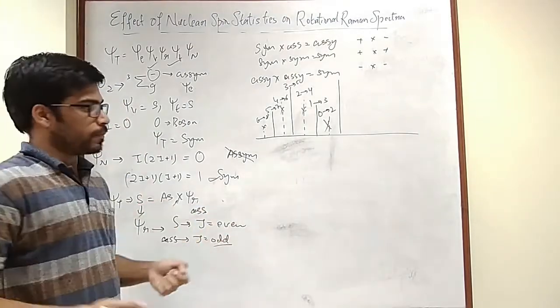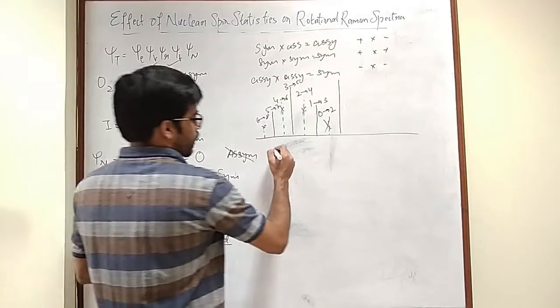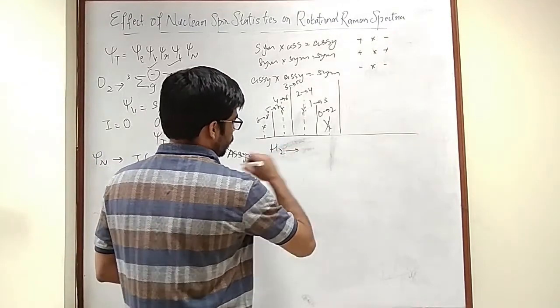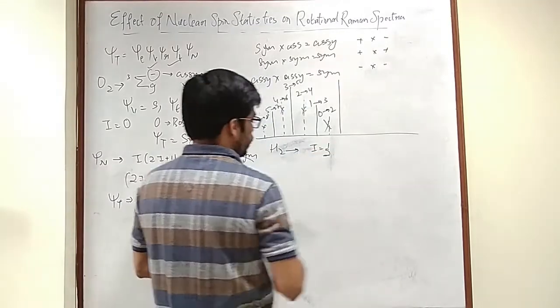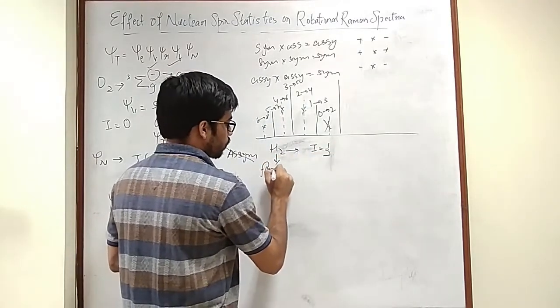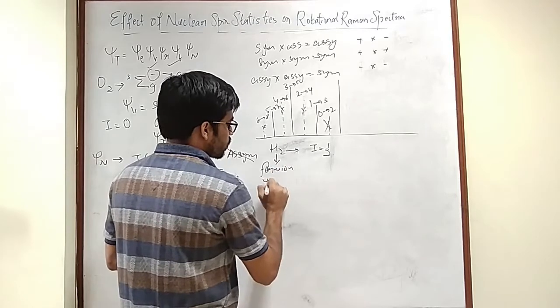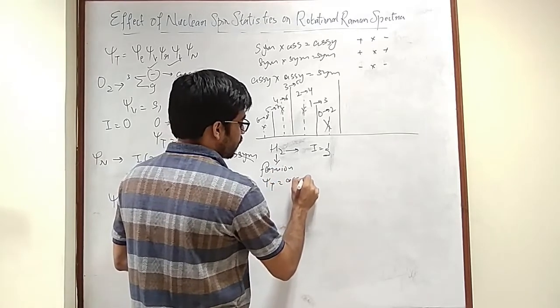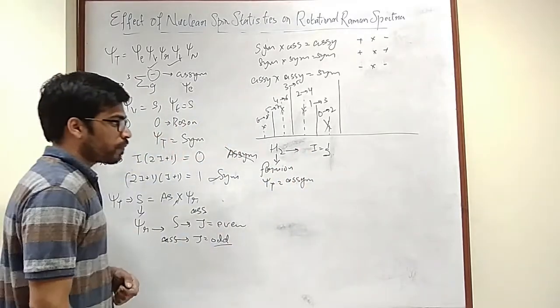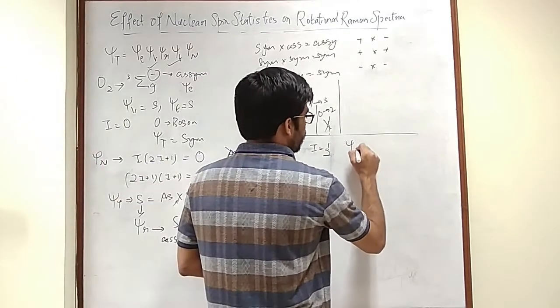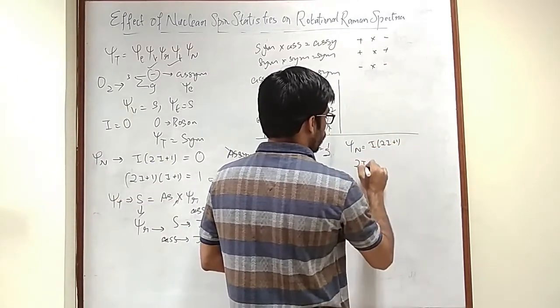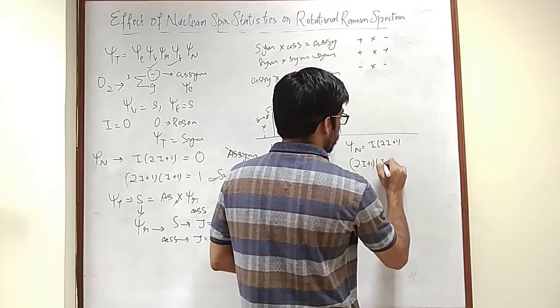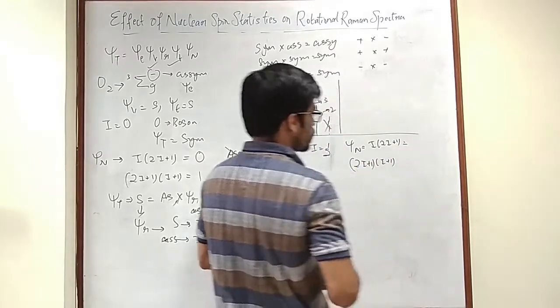Now let's take another example. Let's say we are taking H2. Now H2 has I equals to half and this is a fermion. So psi total has to be anti-symmetric. Now this would give you psi n to be I into 2I plus 1, and 2I plus 1 into I plus 1. This turns out to be 1. This turns out to be 3.